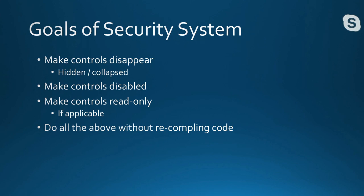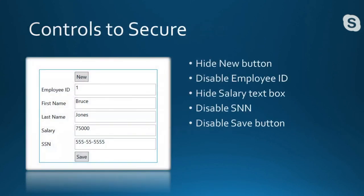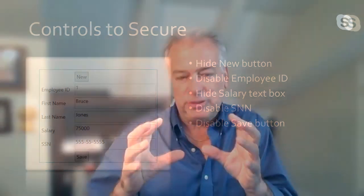I made a sample screen with a New button, some employee data, and a Save button. We might want to hide that New button, disable the Employee ID, hide the Salary text box, disable the SSN, and disable the Save button. I'll show you a couple of different techniques for securing this form, pointing out the pros and cons of each.